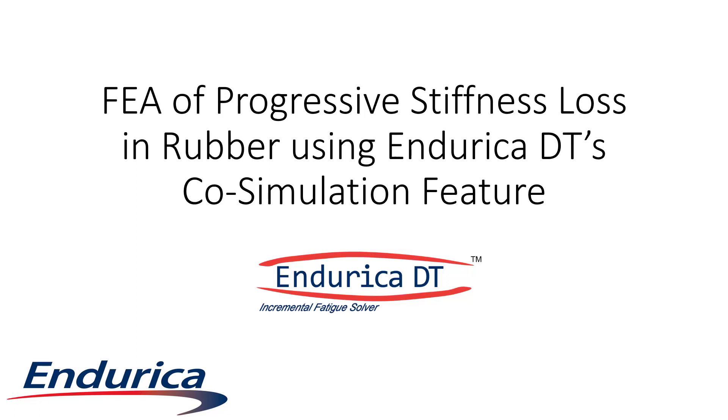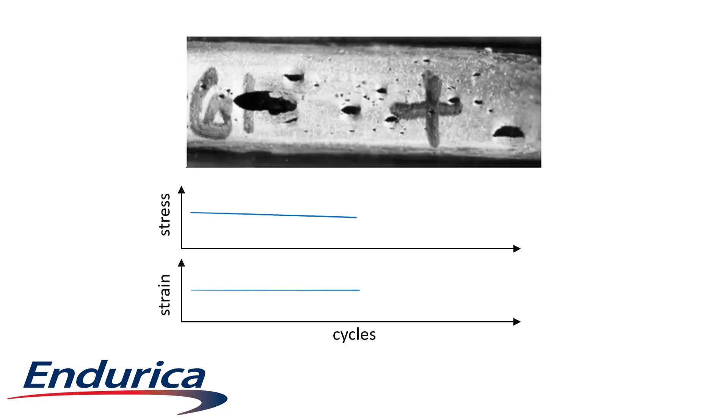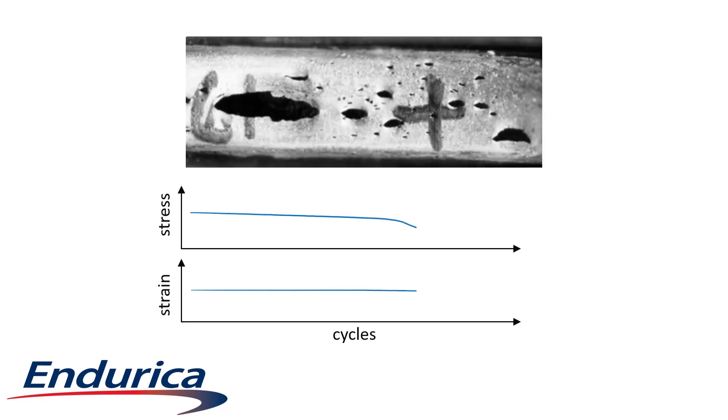Endurica DT can simulate the evolution of stiffness loss in a finite element model. In rubber, fatigue causes both crack growth and stiffness loss. This stiffness loss can affect behavior even before cracks are noticeable.